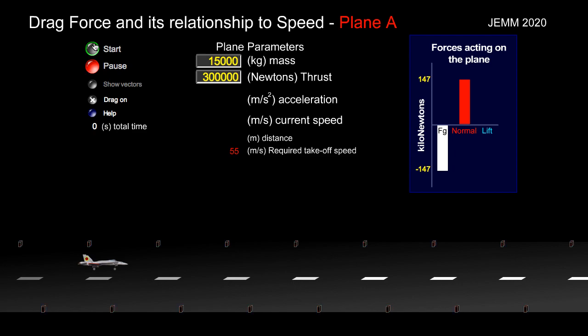In a moment I'm going to press the start button and you're going to see this plane take off. As the plane is going down the runway, you'll have to pause the video at those specific values in the table: 15 meters per second, 20, 25, 30, 35, and 40 meters per second. As you pause the video near those speeds, please record the acceleration.